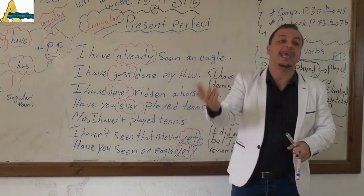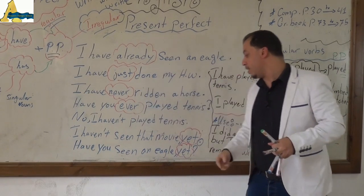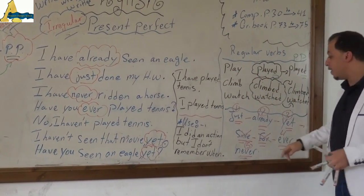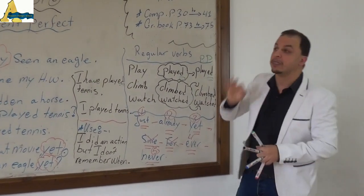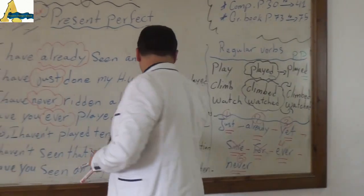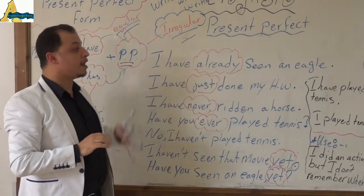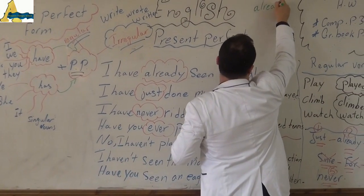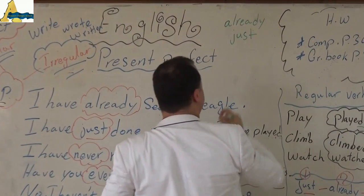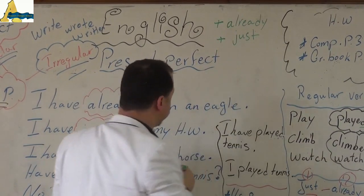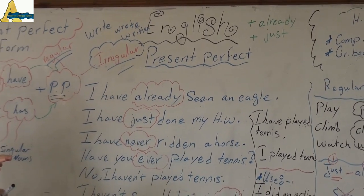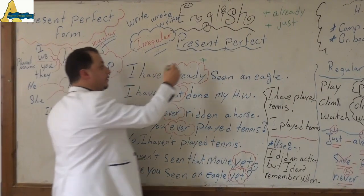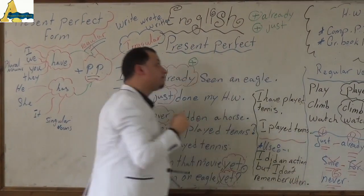What about the way to negate them? Already, just, never, ever, and yet — all of these are open in time, you cannot determine one of them. Let's go to the use of all these keywords. 'Already' and 'just' are used in affirmative tenses. When I tell you I did the action — such as 'I have already seen an eagle' — it means I did the action. It's affirmative. 'I have just done my homework' means I finished it — also affirmative.